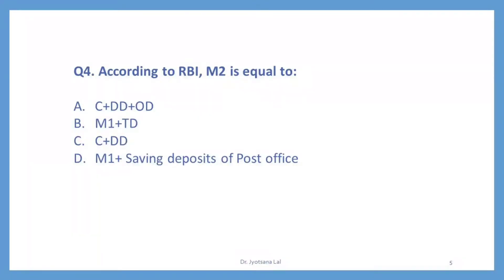Question number 4. According to RBI, M2 is equal to what. There are four options given. Option A — C plus DD plus OD. B — M1 plus TD. C — C plus DD. And fourth option D — M1 plus saving deposits of post office. So what will be the correct option?